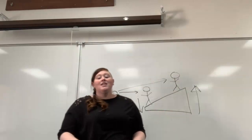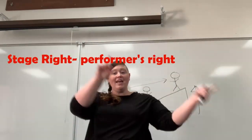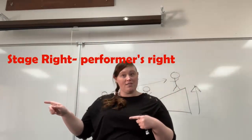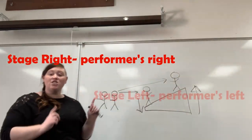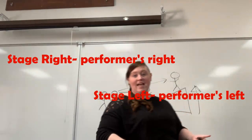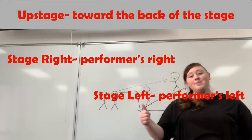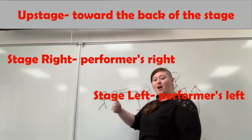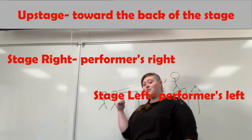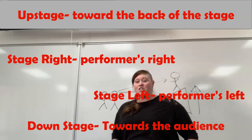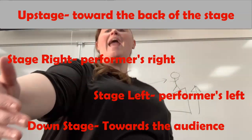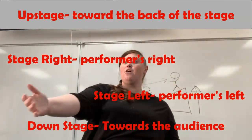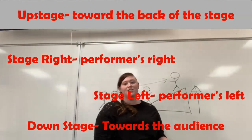So let's refresh. Stage right is the performer's right. Stage left is the performer's left. Upstage means further away from the audience towards the back wall. Downstage means closer to the audience. You might even come right down on the apron of the stage - that's as far downstage as you can get if your stage has an apron.